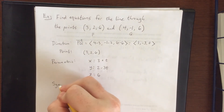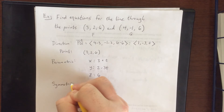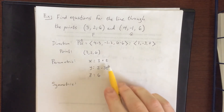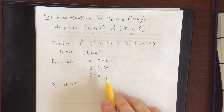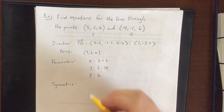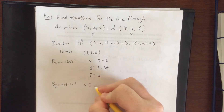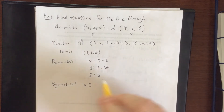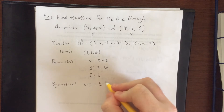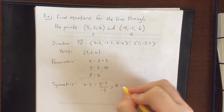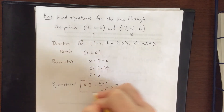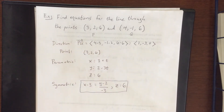An interesting thing happens when we try to write the symmetric form. We said to solve for t in all three equations, but we don't have a t in the z equation. So solving the first equation gives (x−3)/1, the second gives (y−2)/(−3), and since we can't solve for z, we just keep z = 6 as a separate condition.